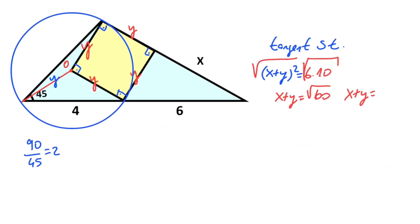And x + y equals 2 root 15. So y equals 2 root 15 minus x. Let's write here: y equals 2 root 15 minus x. And here is also 2 root 15 minus x.